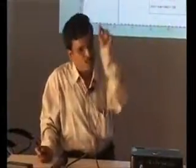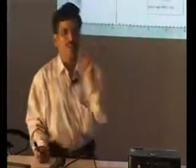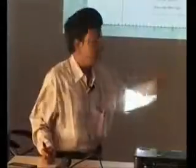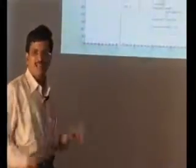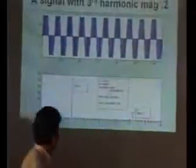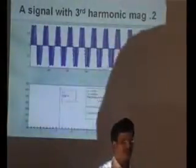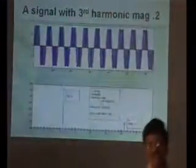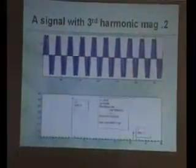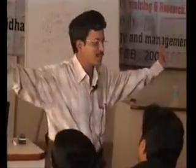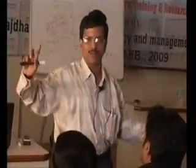Another example. Here I have a fundamental and third harmonic of 0.2 magnitude - that means I have 50 Hertz and 150 Hertz. 50 Hertz magnitude is 1, 150 Hertz magnitude is 0.2. This is a mixed signal, and I am taking 10 cycles with 640 points. So what is the frequency resolution? 64 into 50 divided by 640 equals 5 Hertz.